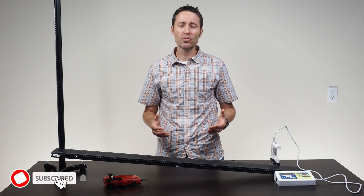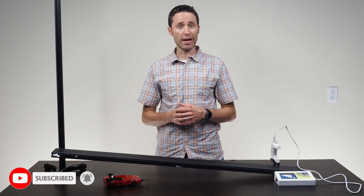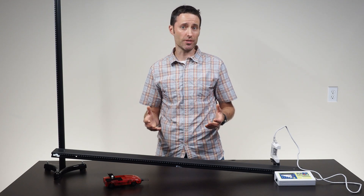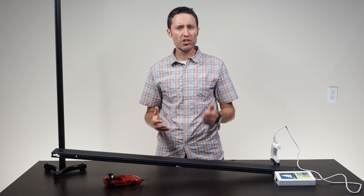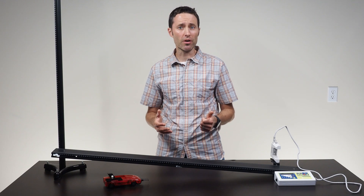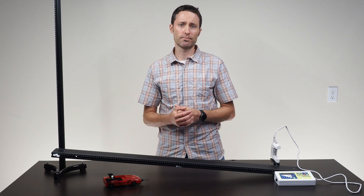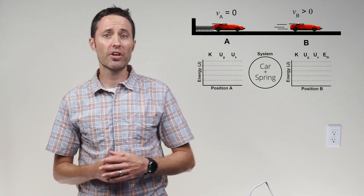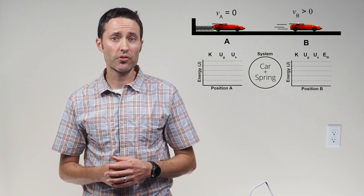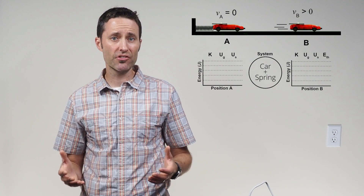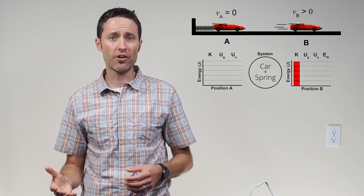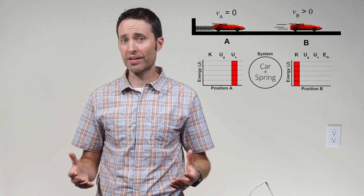Now that students can easily calculate the car's velocity, they will need to figure out how they can measure the car's kinetic energy. Ask students what they can do to transfer a measurable amount of kinetic energy to the car when it moves through the photogate. Students typically come up with two different scenarios. Scenario one involves using a compressed spring to launch the car on a level track. In this scenario, the car's final kinetic energy is equal to the initial potential energy.